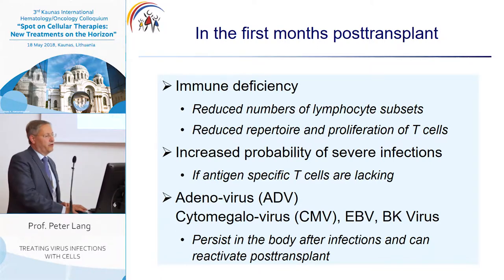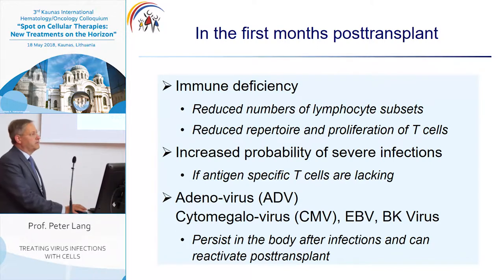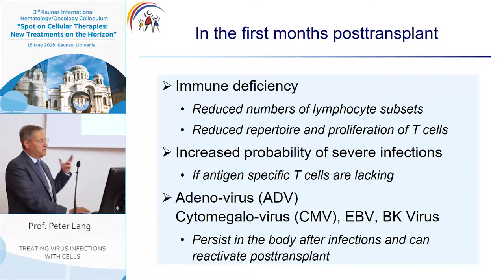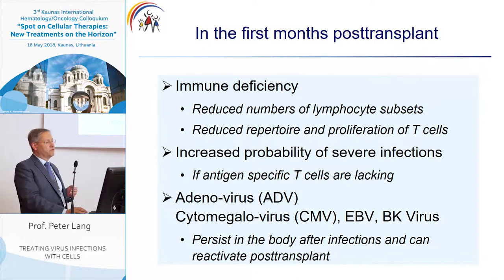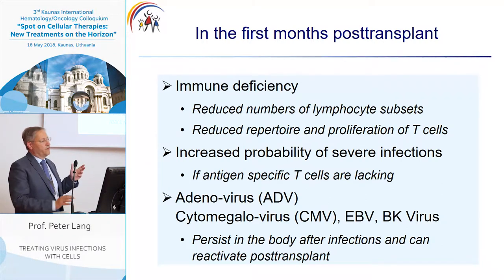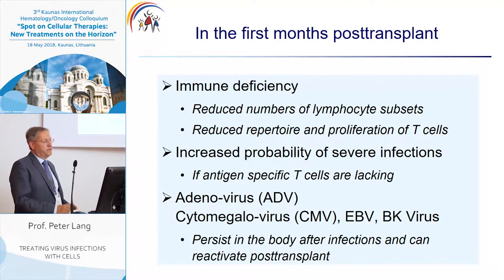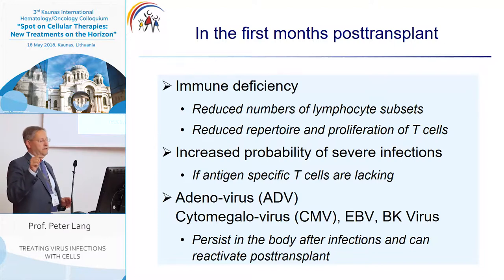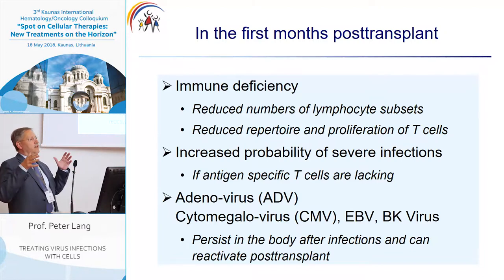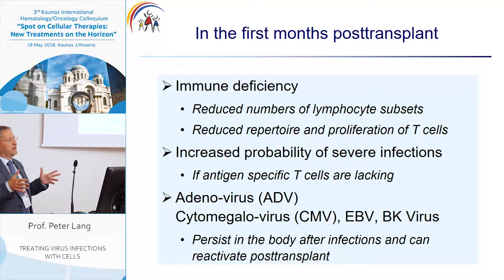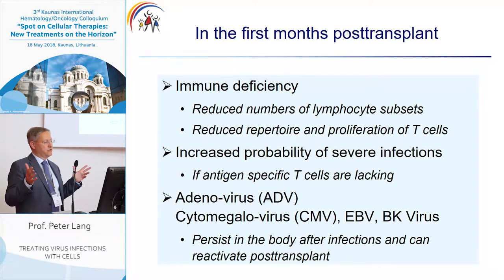In the first month post transplant, there is a deep immune deficiency because of reduced numbers of lymphocytes and a reduced repertoire and proliferation capacity of T cells. This causes an increased probability of severe infections, especially if antigen-specific T cells are lacking. Our main enemies are adenovirus, especially in children.